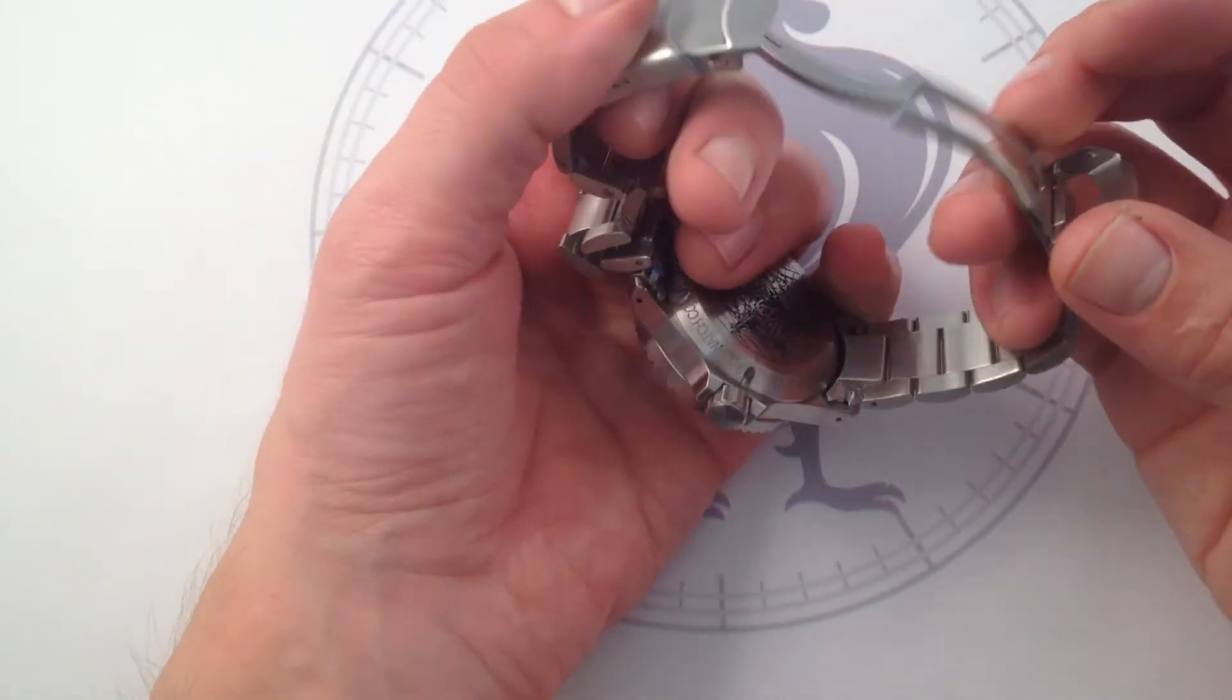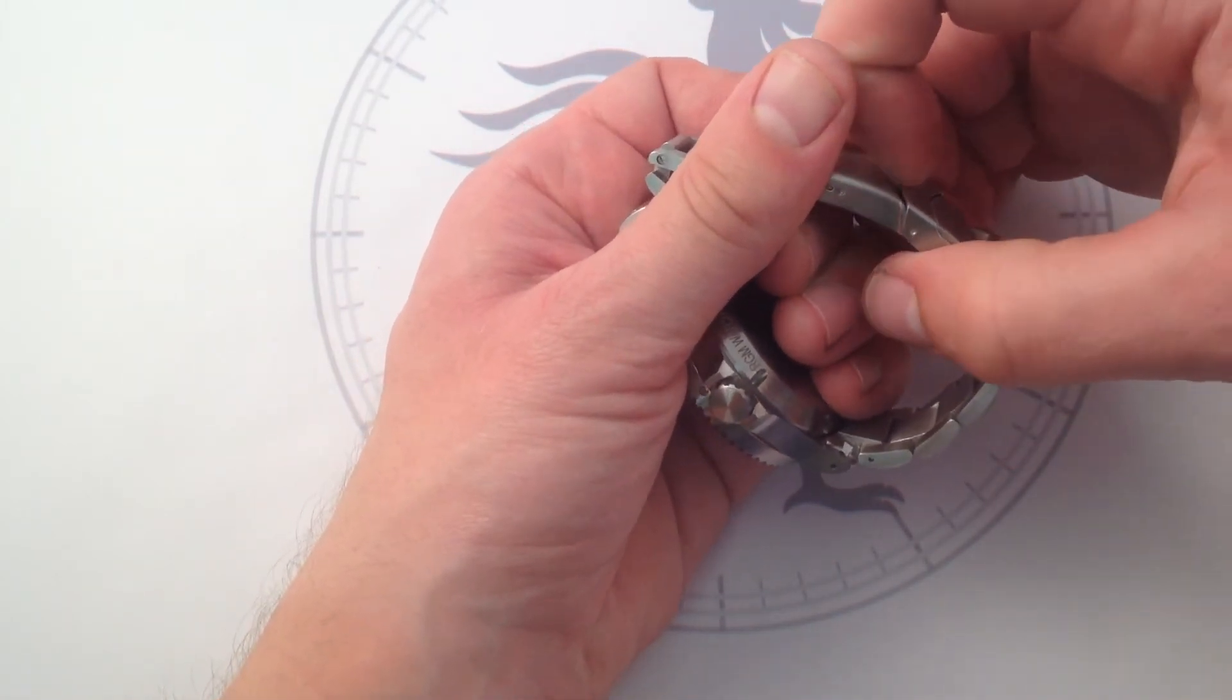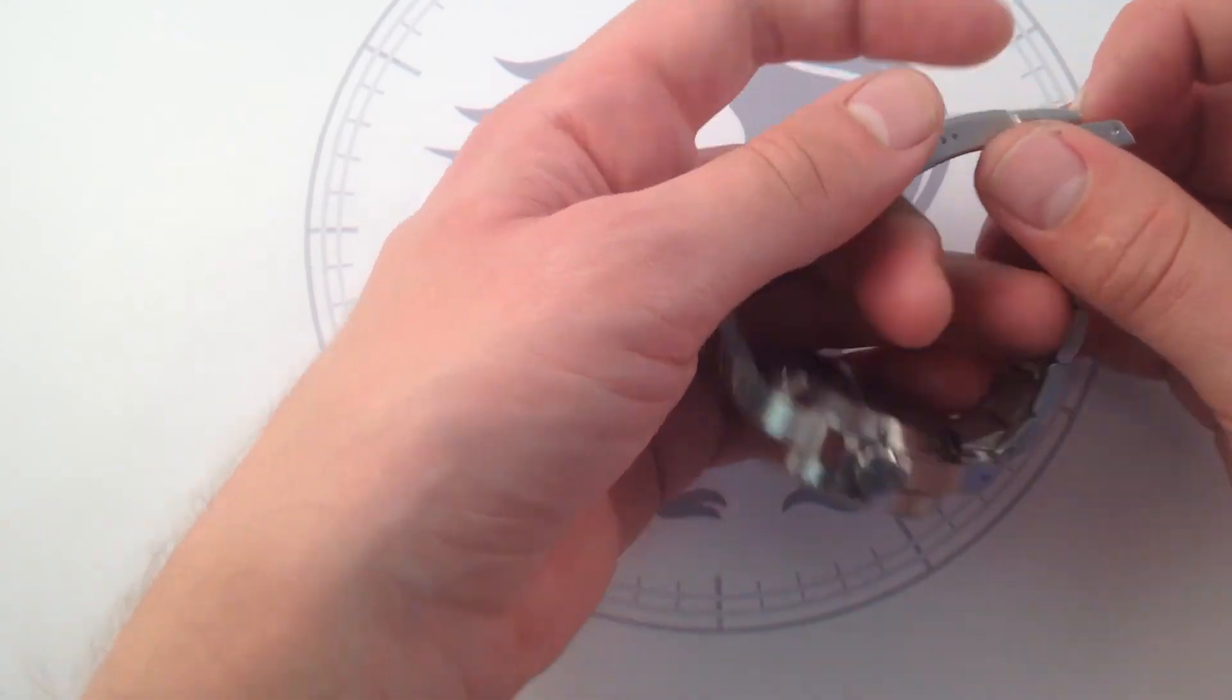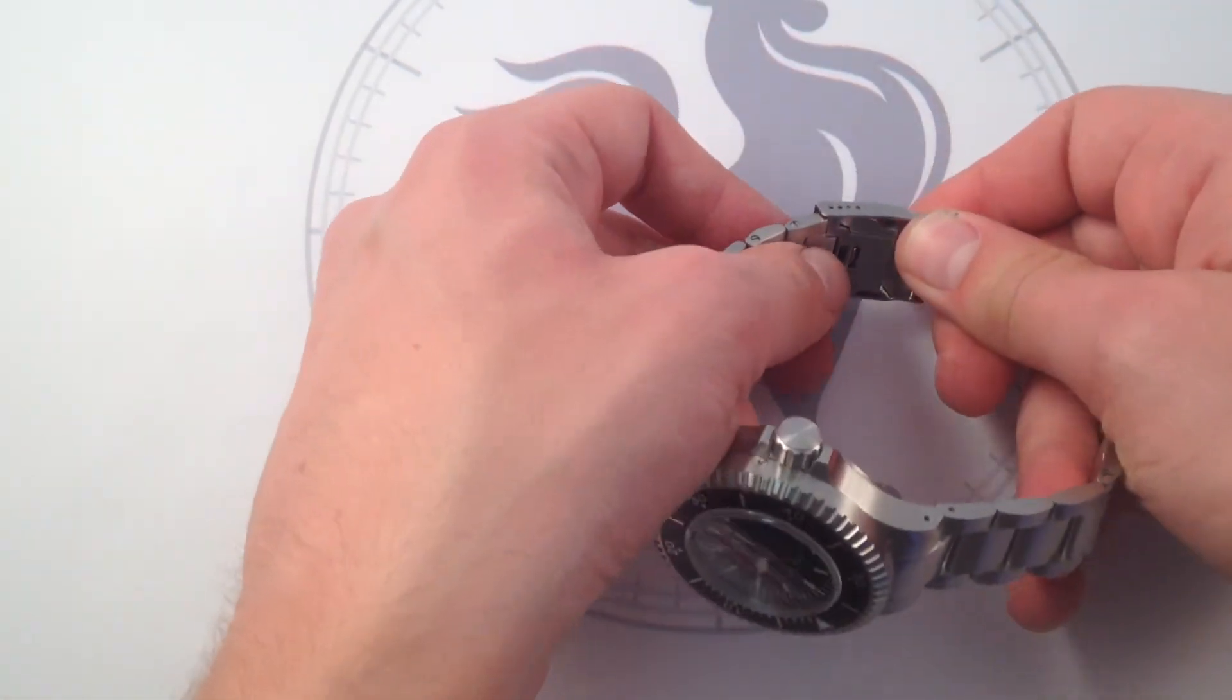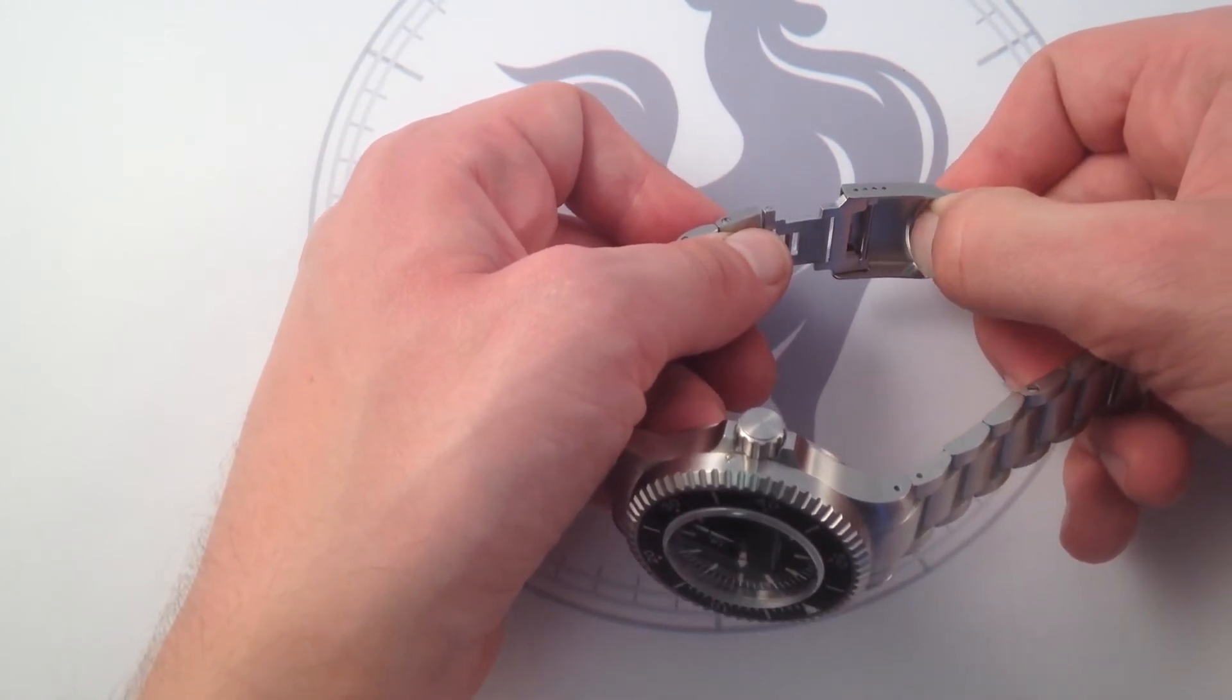Likewise, the bracelet, which features a clamshell, closes with a satisfying snick, opens with the same, and features a beautiful CNC-machined dive extension. It's as solid as the rest of the watch.